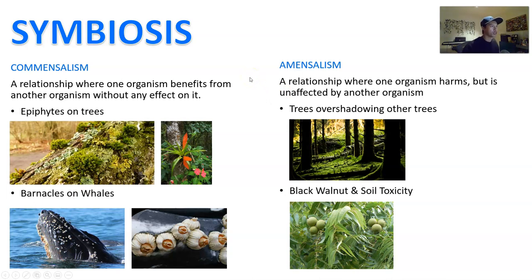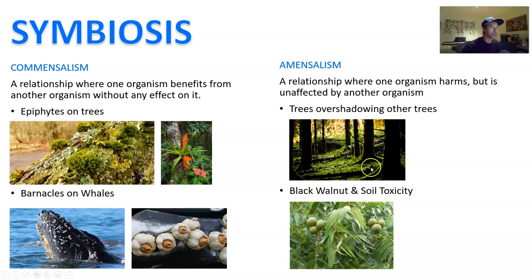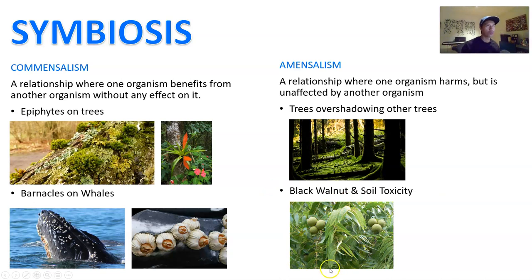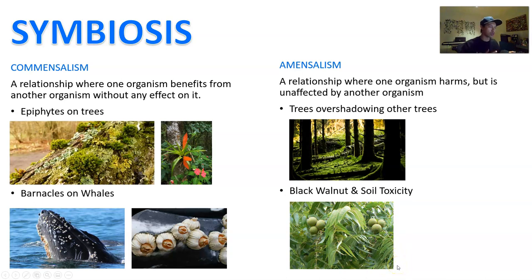Amensalism involves harmful relationships that are neutral to one party. For example, a large tree overshadowing a smaller tree: the little tree is harmed by the big tree, but the big tree doesn't get affected by the little tree at all. Similarly with soil toxicity — walnuts naturally release toxicity that harms other plants around them, but it's of no benefit to the walnut itself.